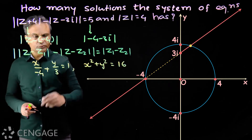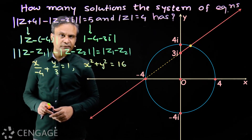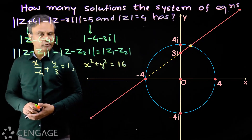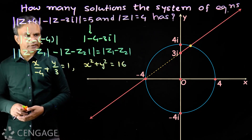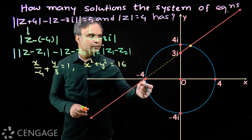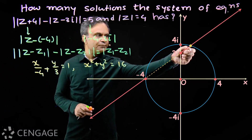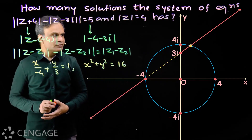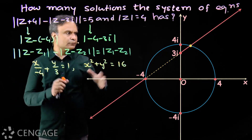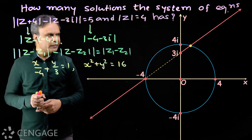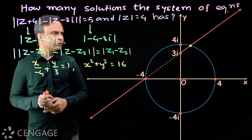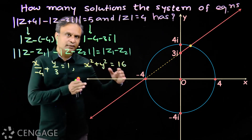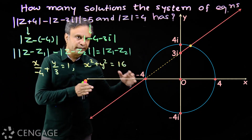We solve these two equations by eliminating one variable, say y. We will get a quadratic in x. There will be two values of x: one value will be minus 4 and the other will be the x-coordinate of the point of intersection. This is how we solve these two equations. Anytime you can move from complex numbers to Cartesian form.